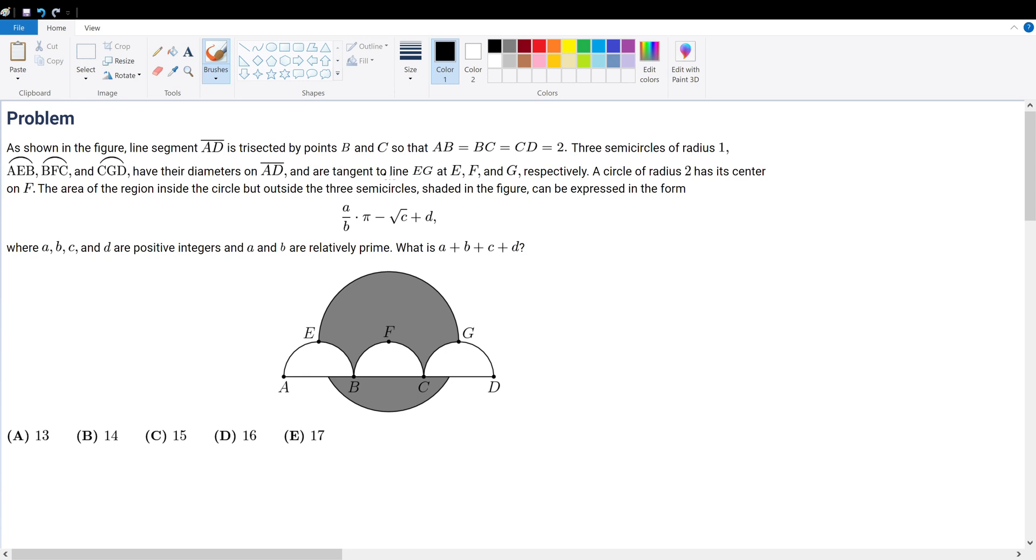Welcome back to a new problem. As shown in the figure below, line segment AD is trisected by points B and C, so that AB equals BC equals CD equals 2.